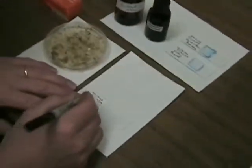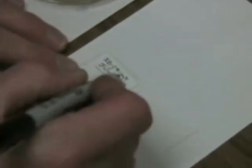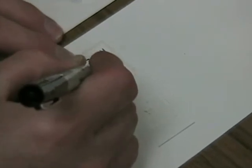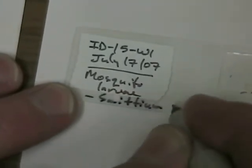What we'll do here is a demonstration of how to preserve a slide. Just important in terms of record keeping is to have a specimen ID, a date, and usually some description such as a mosquito larva and the name of the fungus if you have that.